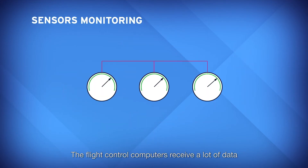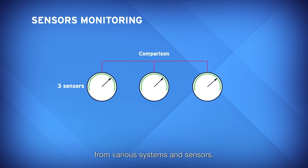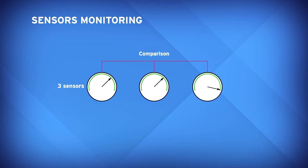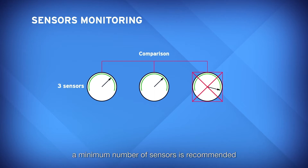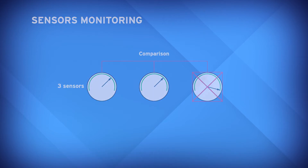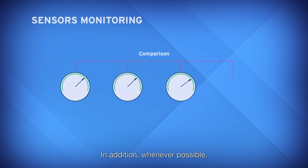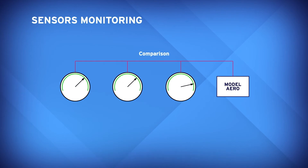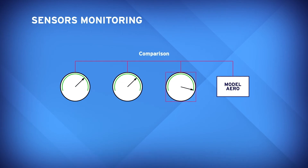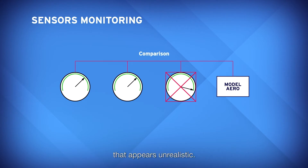The flight control computers receive a lot of data from various systems and sensors. To get reliable information for critical parameters, a minimum number of sensors is recommended with a vote between them. In addition, whenever possible, data are compared to other information such as models, to eliminate a parameter that appears unrealistic.